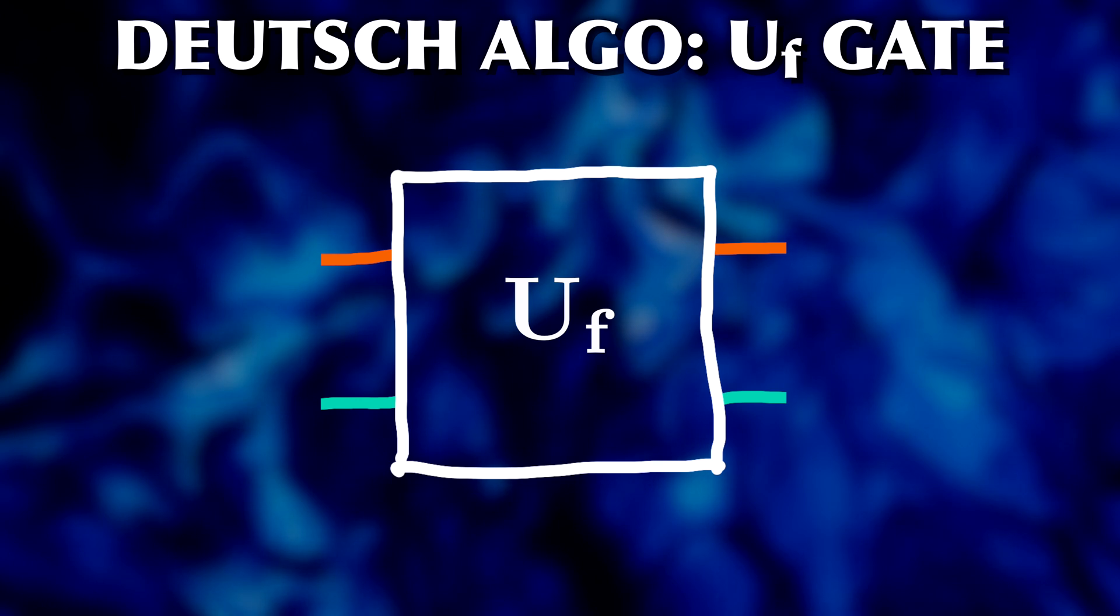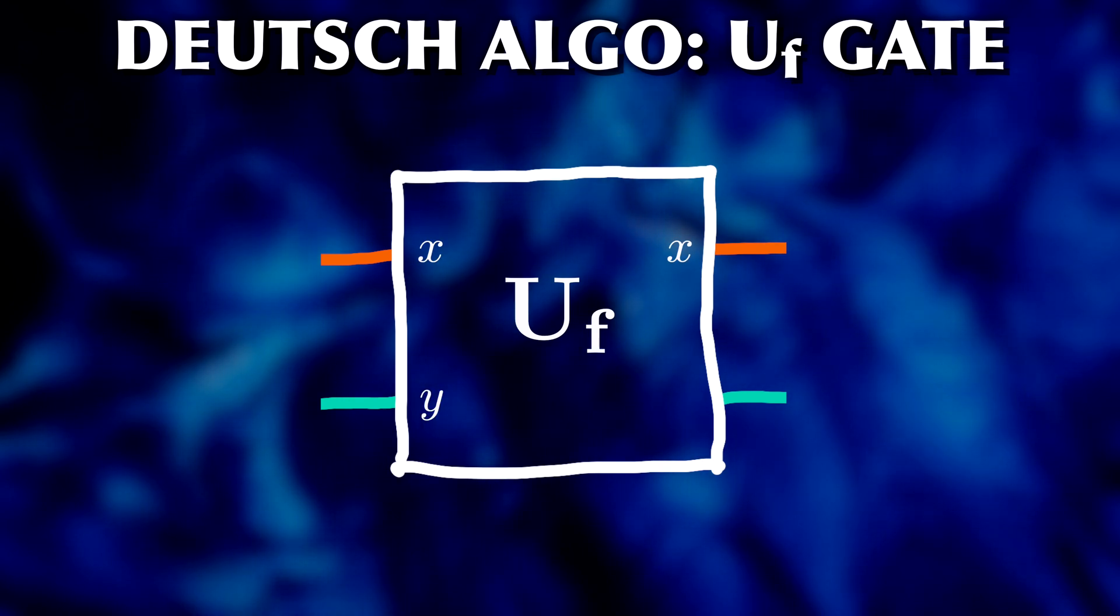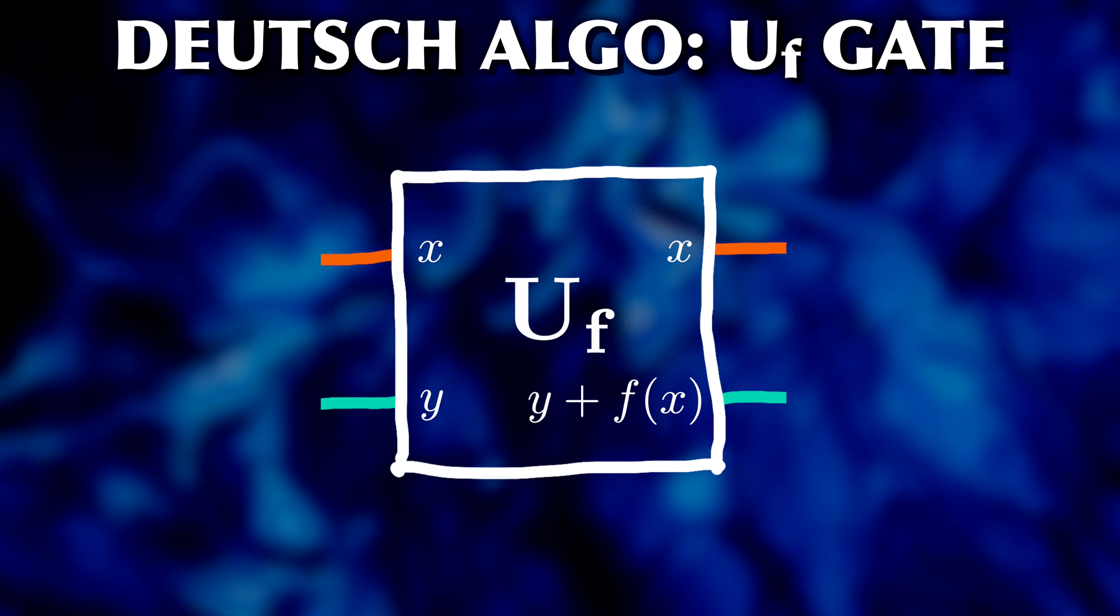For this, we construct a two-qubit operation Uf that uses qubit 1 as trigger and qubit 2 as target. And its effect on qubit 2 is to add the value of the function for the trigger qubit onto the target qubit.